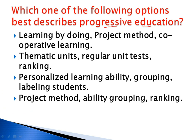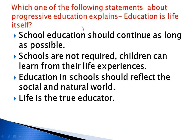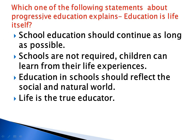Question 6: Which one of the following options best describes progressive education? Progressive education, as covered in the syllabus, is a very important topic, along with continuous and comprehensive evaluation. Progressive education includes learning by doing, project method, and cooperative learning. This option is the correct answer for this question.